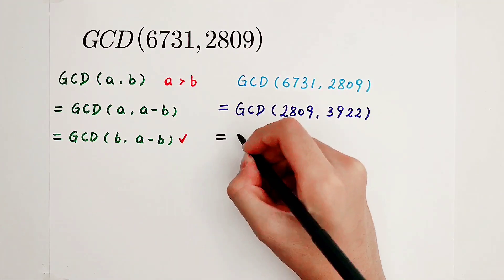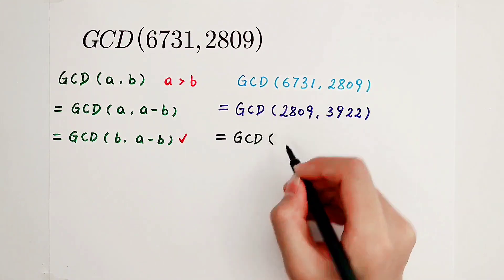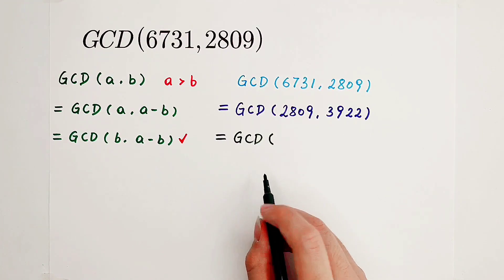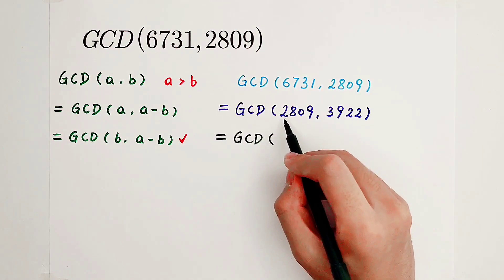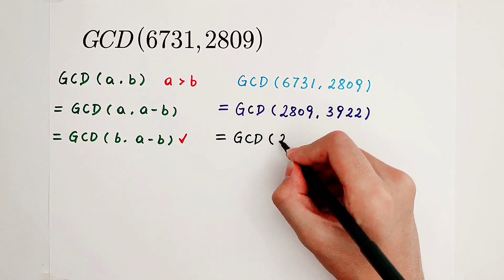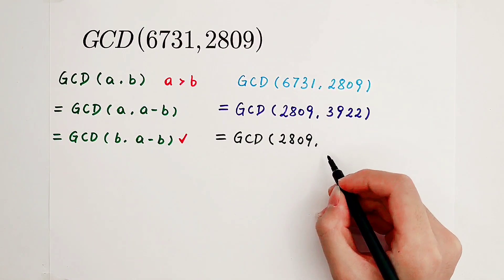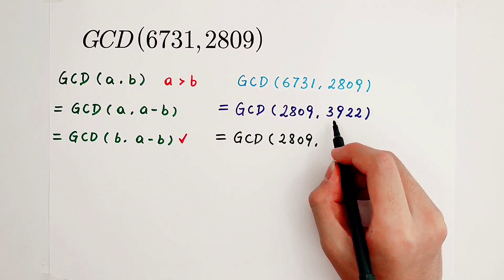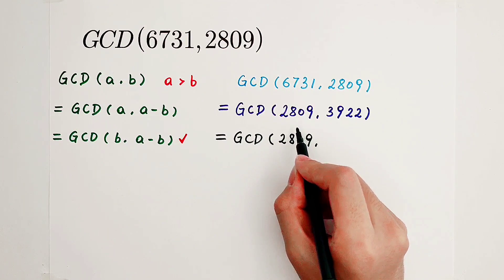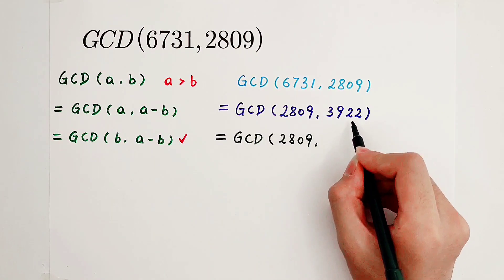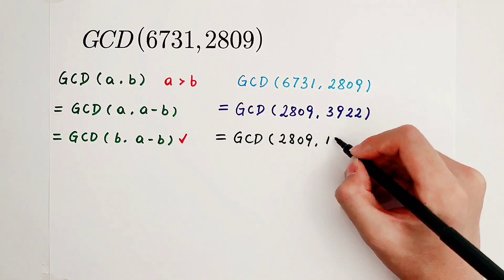Then, further. Use this formula again. We should write the small number first, and the small number is 2809. Then the subtraction of these two numbers — the big one minus the small one: 3922 minus 2809 is 1113.